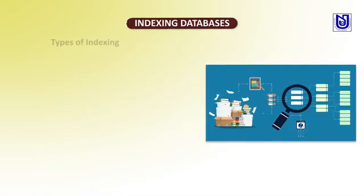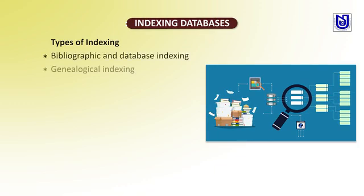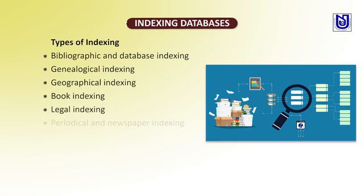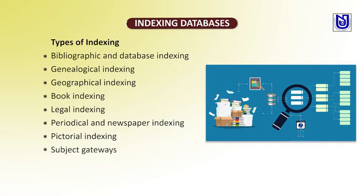Types of indexing include: bibliographical and database indexing, genealogical indexing, geographical indexing, book indexing, legal indexing, periodical and newspaper indexing, pictorial indexing, subject gateways, and websites and metadata indexing.